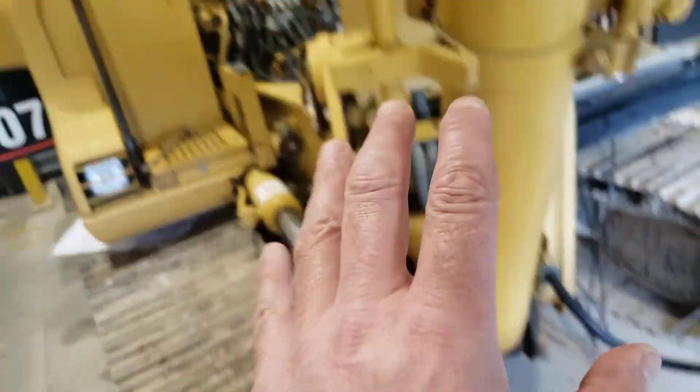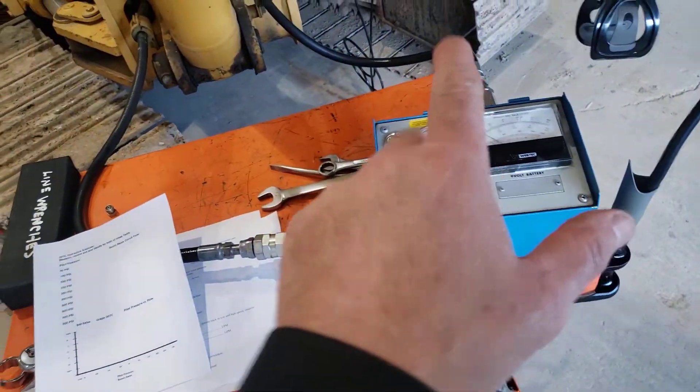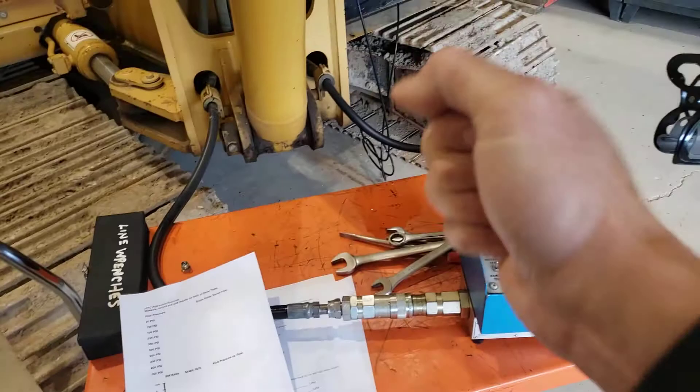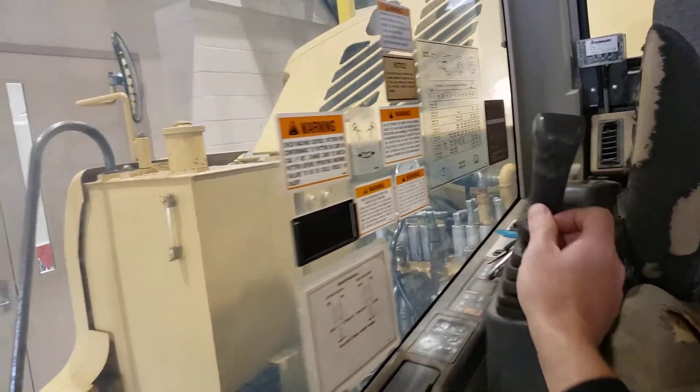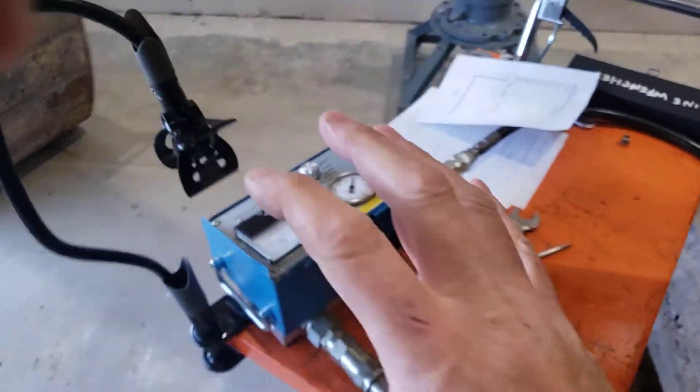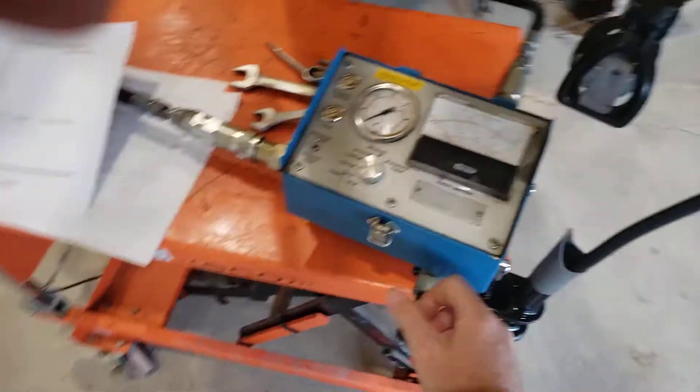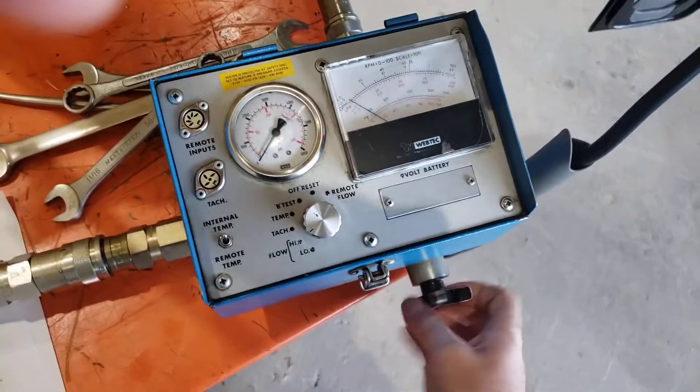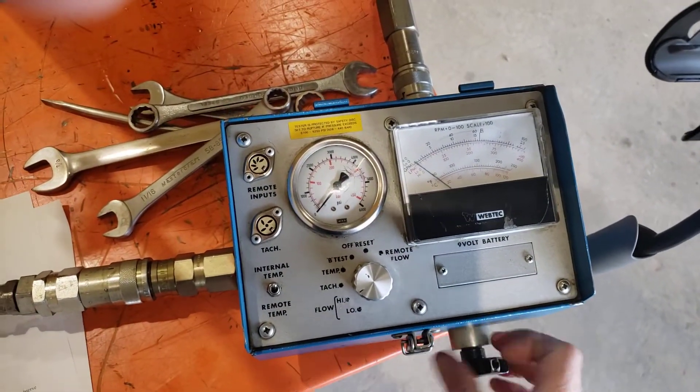I'm going to want to know what the maximum flow is doing a full two pump boom raise function. So pulling all the way back on the boom control, I'm going to want to know what the unrestricted flow is through the flow meter. So I'm going to open the load valve all the way here.